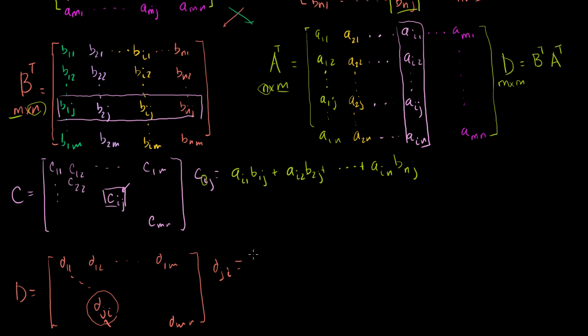So what is this dot product going to be equal to? It's going to be b_ij. Let me write it this way. It's going to be b_ij times a_i1, or we could write it as a_i1 times b_1j. And it's going to be plus b_2j times a_i2, which is the same thing as a_i2 times b_2j. And you're going to keep going until you get b_nj times a_in, or you could write that as a_in times b_nj.